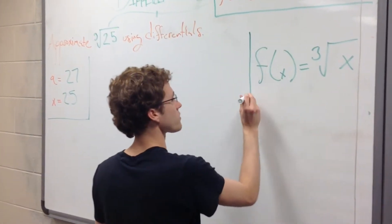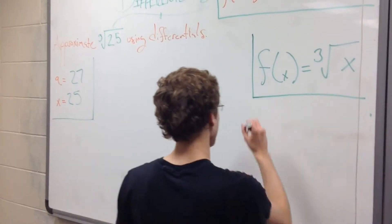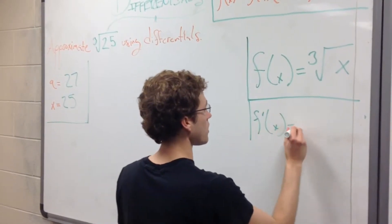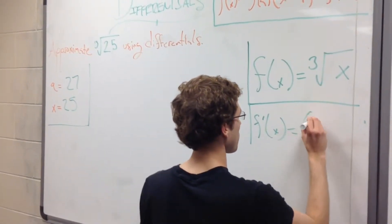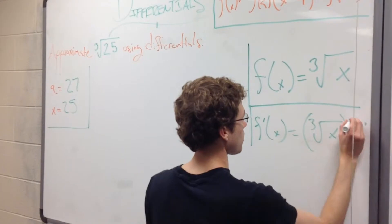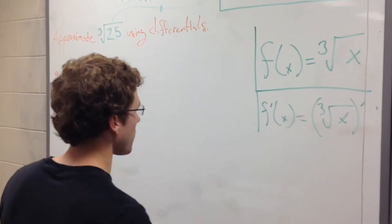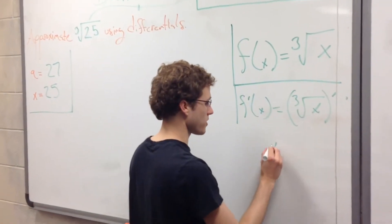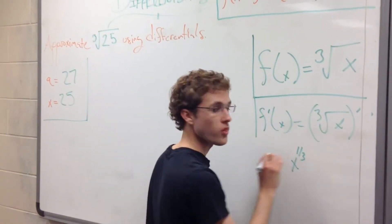If f of x is the cube root of x, then f prime of x equals cube root of x prime. So how do we take the cube root of x prime? Well, we're just going to, this is the same thing as, the cube root of x is the same thing as x raised to the one-third power.